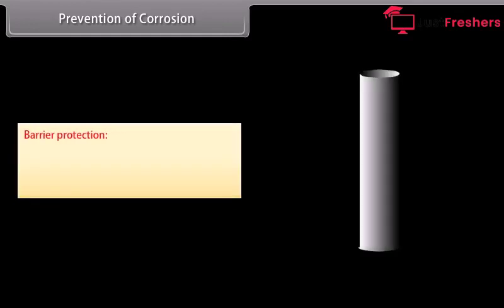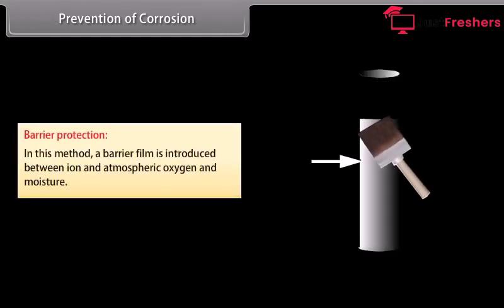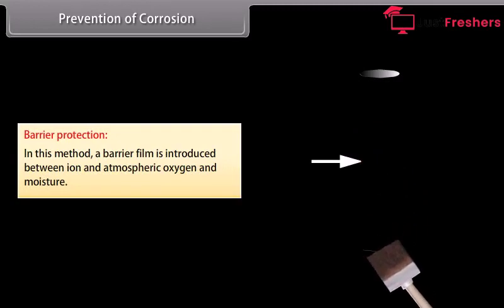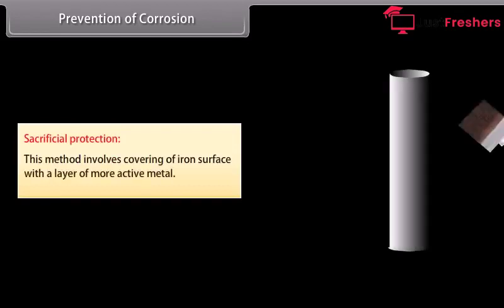Prevention of corrosion. There are many methods for protecting metals from corrosion. Some of these are as follows: Barrier protection: In this method, a barrier film is introduced between iron and atmospheric oxygen and moisture. Sacrificial protection: This method involves covering of iron surface with a layer of more active metal.